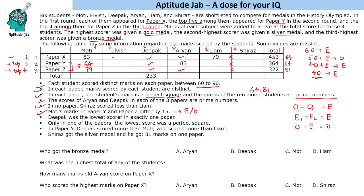Deepak was the lowest scorer in exactly one paper. Since Deepak appears in all 3 papers, the condition tells us he is the lowest scorer in paper Z. Only in one paper is the lowest score a perfect square, and that can be 64. Since Moti scored 64 in paper Y but is still appearing in paper Z, 64 is not the lowest score in paper Y. Therefore 64 must be the lowest score in paper X — whoever scores 64 in paper X is the lowest scorer there.